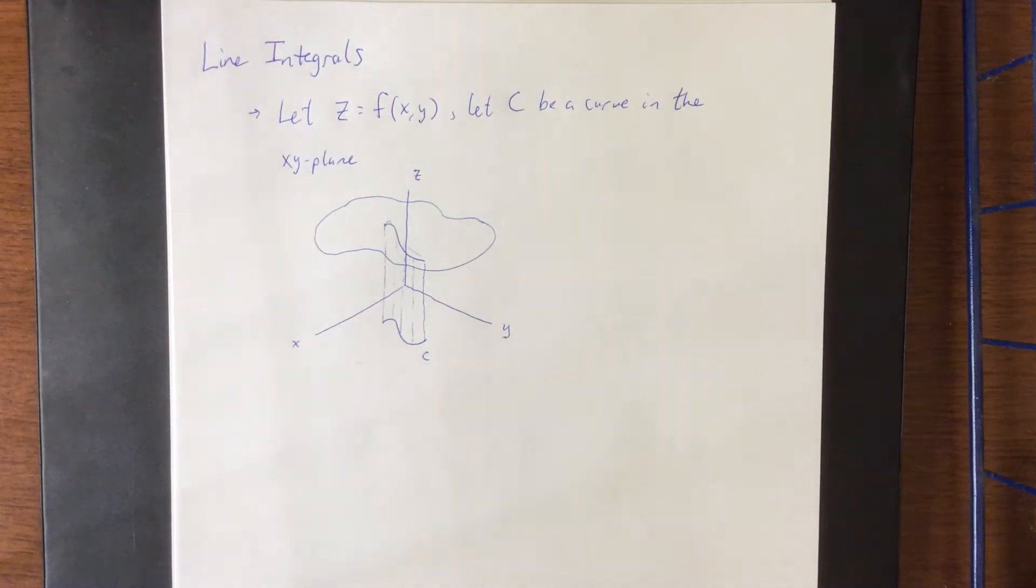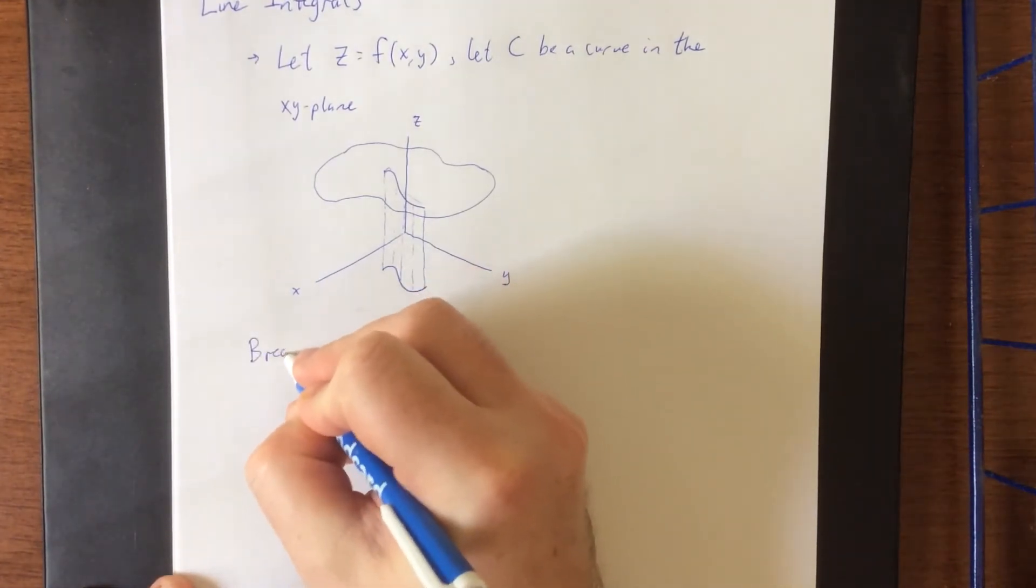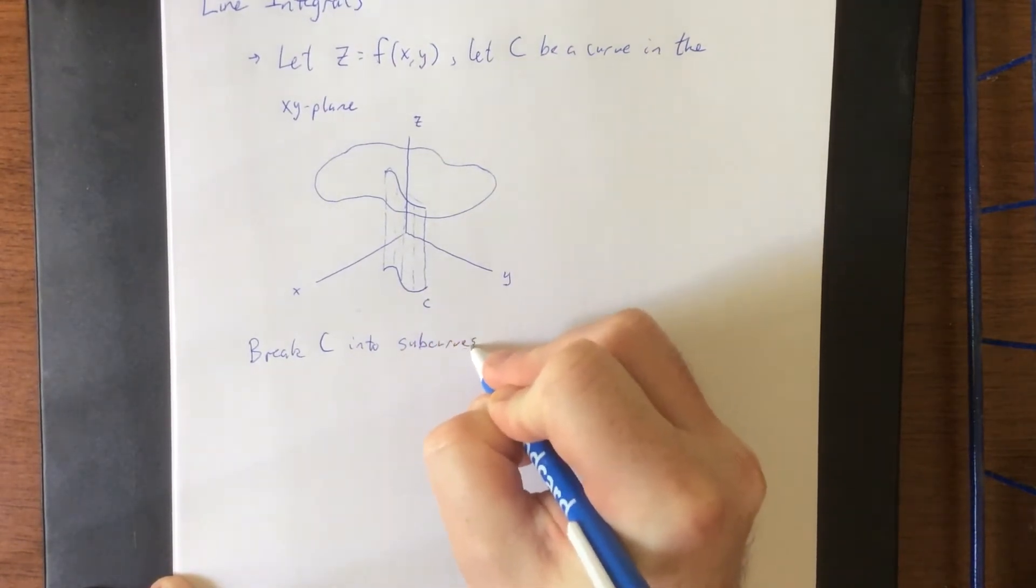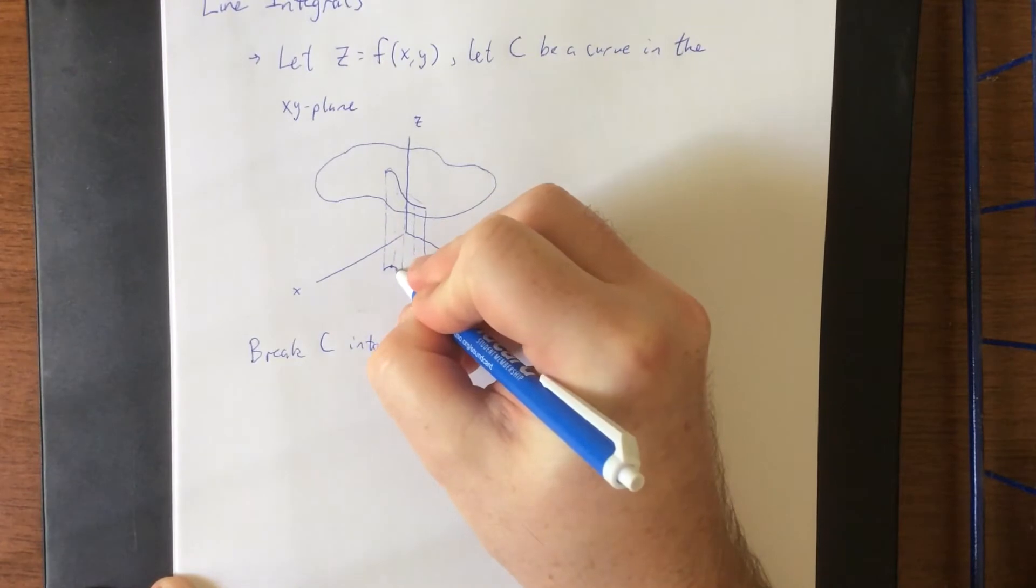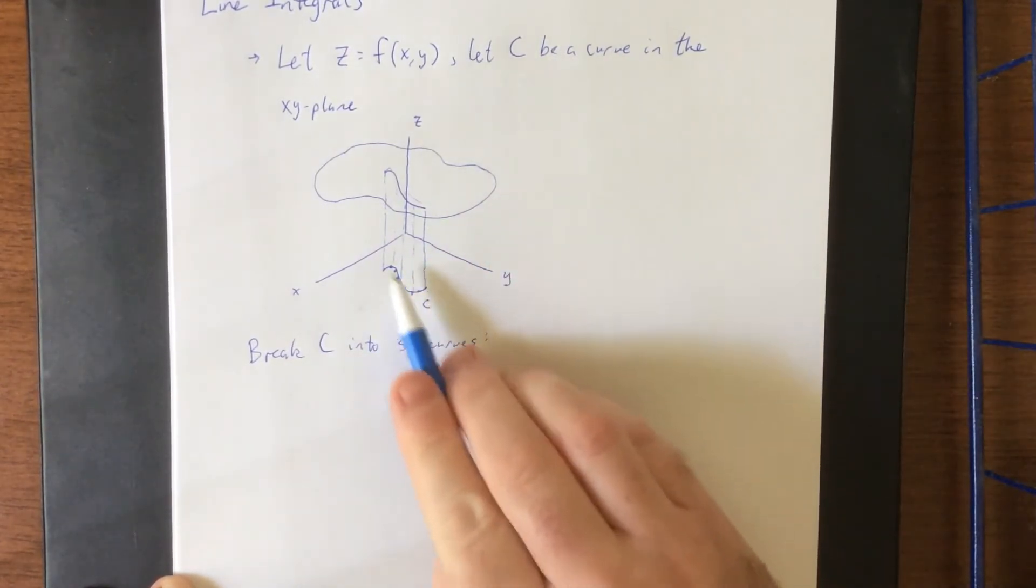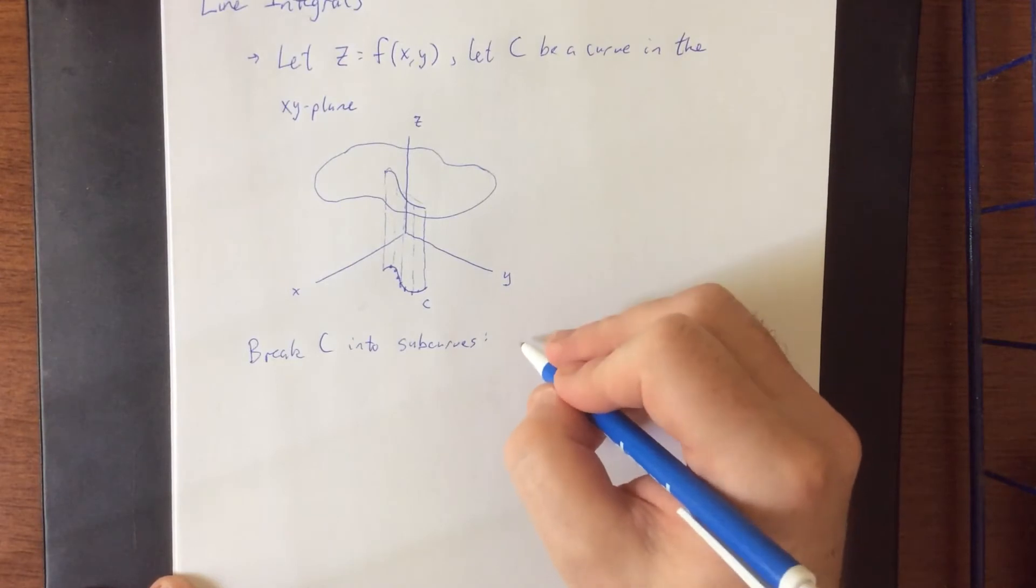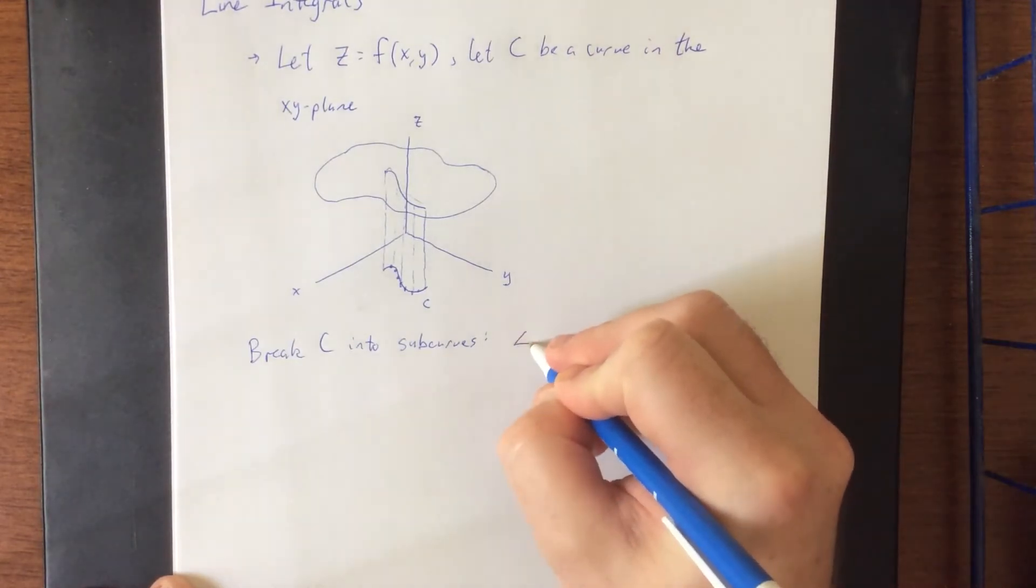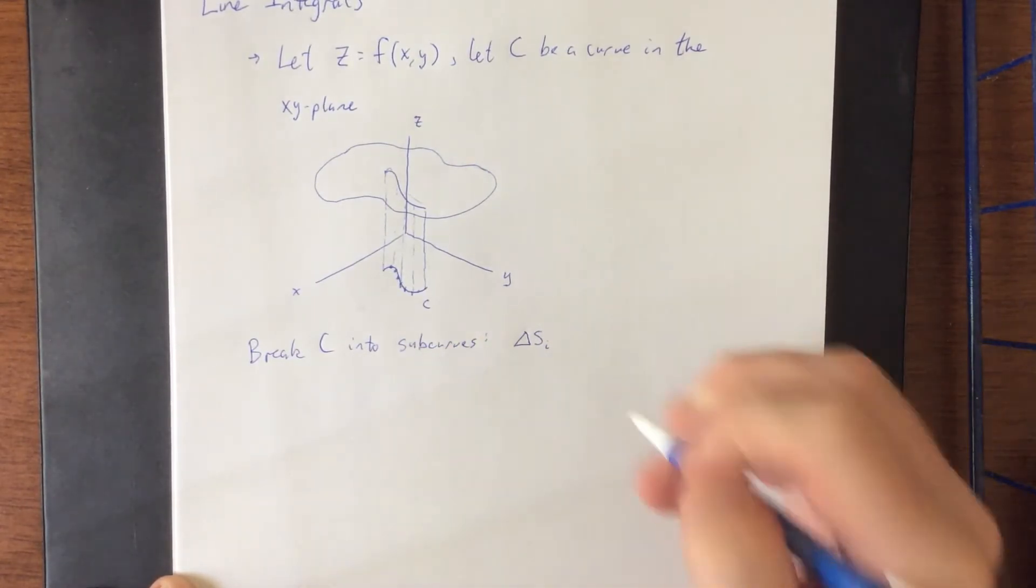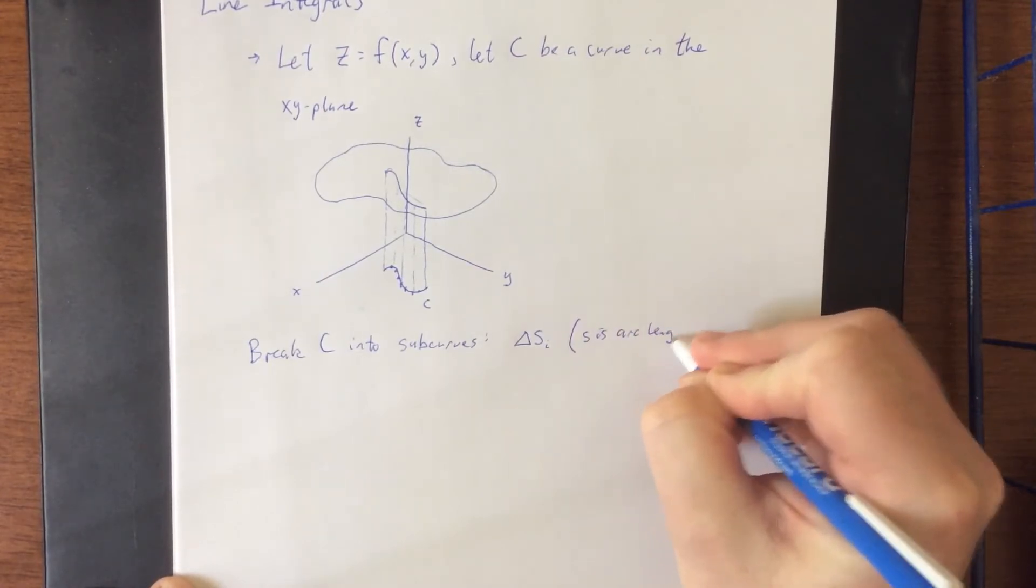Now hopefully this is going to start to feel pretty familiar by this point, but we are going to break C into sub curves. So we'll do a bunch of extra little points along the C. Now along the curve C we don't necessarily have a consistent dx nor a consistent dy with it, so instead we will associate each of these with a delta S, where S will be representative of the arc length of each of those. S is arc length.